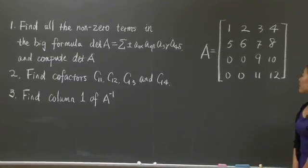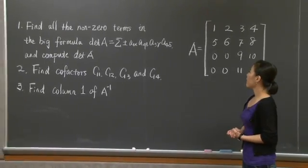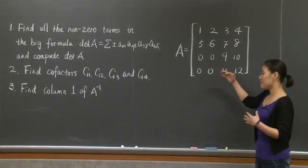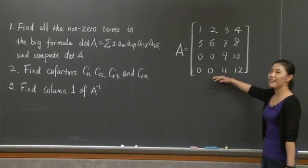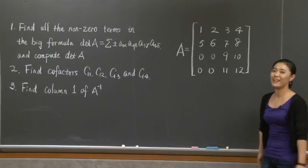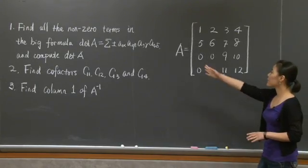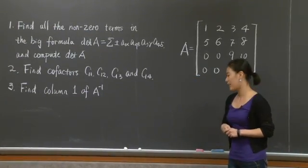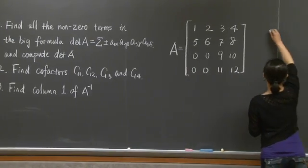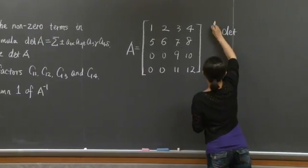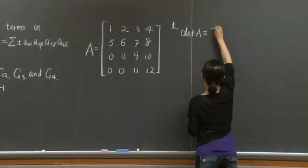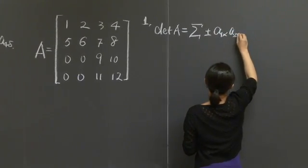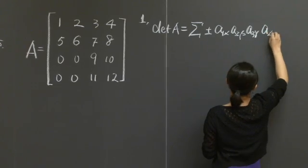Okay, have you finished? Let's solve this problem together. We're looking at a 4 by 4 matrix A here. As you can see, this matrix is made up by the examiner in a rather casual way, because you have numbers from 1 to 12 as the entries of this matrix. In the first part, we want to find all the non-zero terms in this big formula to compute determinant of A. So the determinant of A, that's equal to a big summation of plus or minus A1 alpha, A2 beta, A3 gamma, and A4 delta.